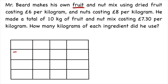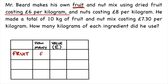We can start by doing a table of values, starting with the fruit first. There are two things we can ask ourselves: how many kilograms of fruit does he have, and what's the value of that amount? So we can say f is the variable for fruit — the quantity would be f, and the value, because we know it's £6 per kg, is going to be 6 times f.